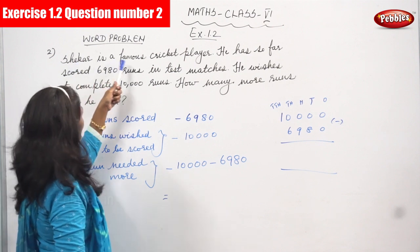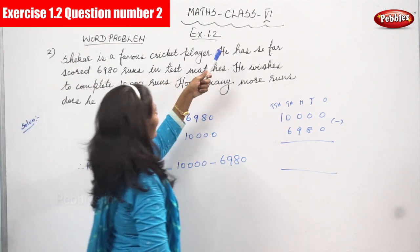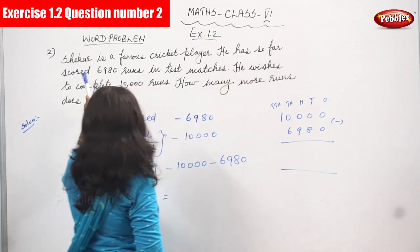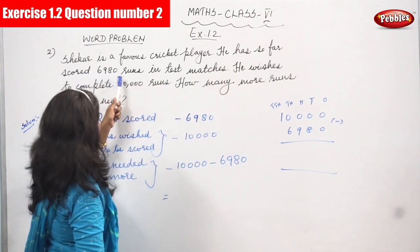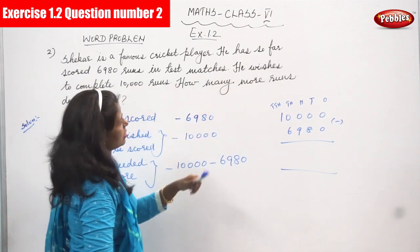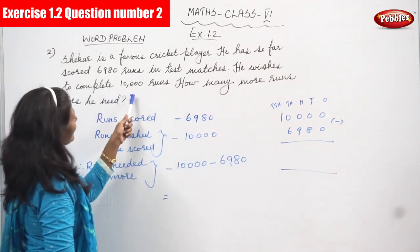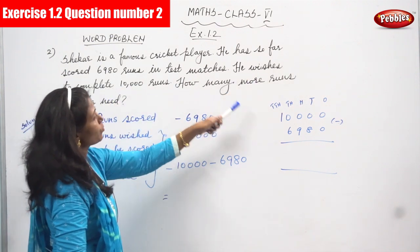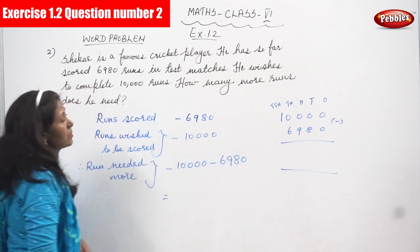Shaker is a famous cricket player. He has so far scored 6,980 runs in test matches. He wishes to complete 10,000 runs. How many more runs does he need?